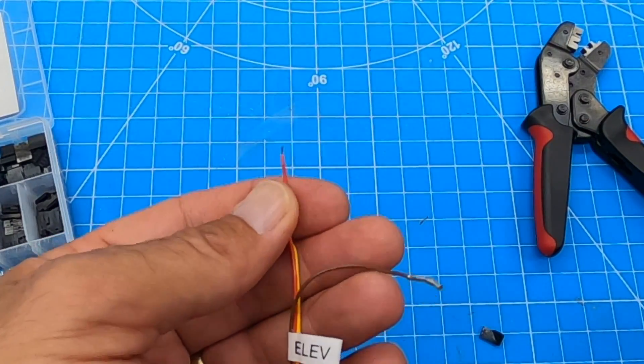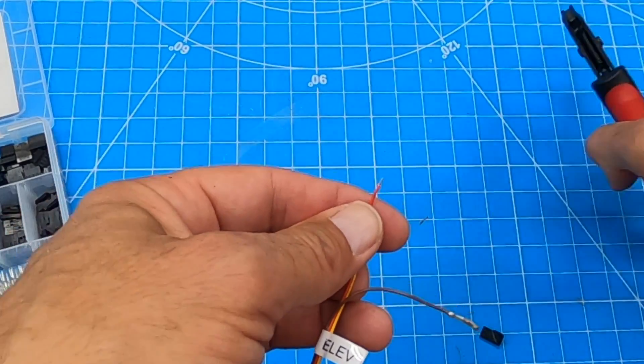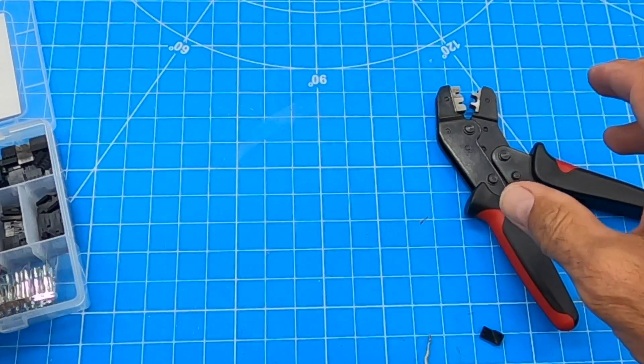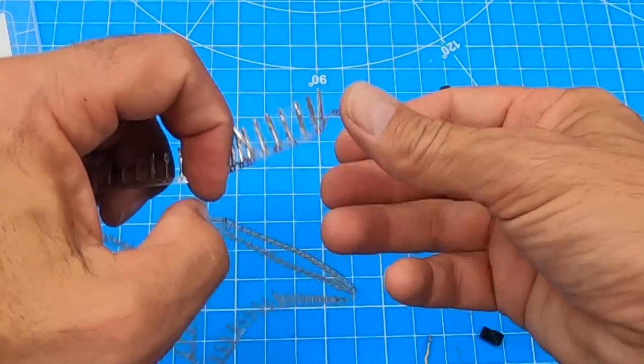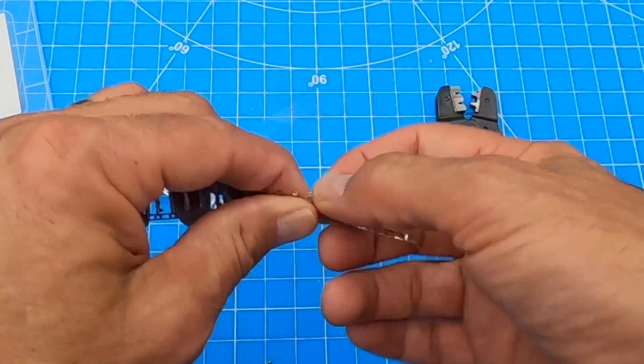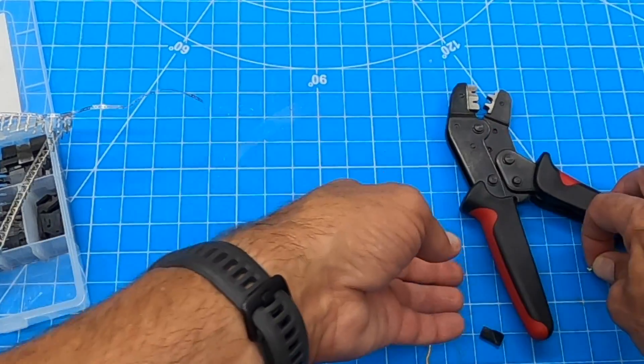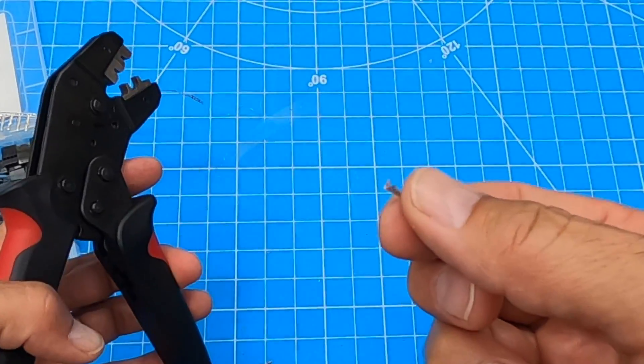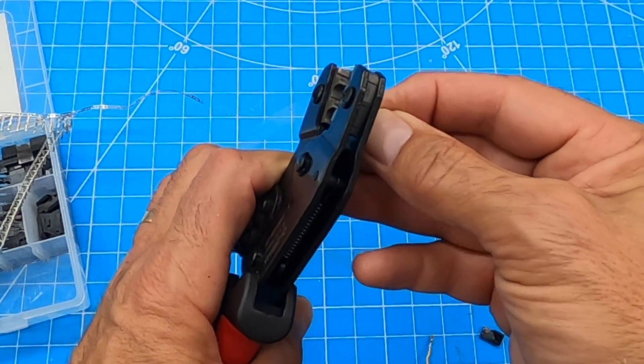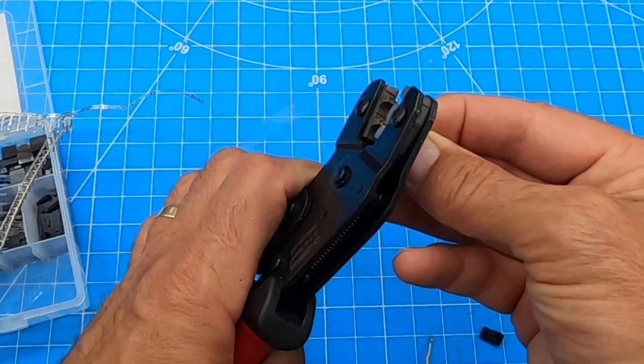All right, next thing I'm gonna do is get one of my pins and take that pin off that ribbon. Insert that into my crimper.